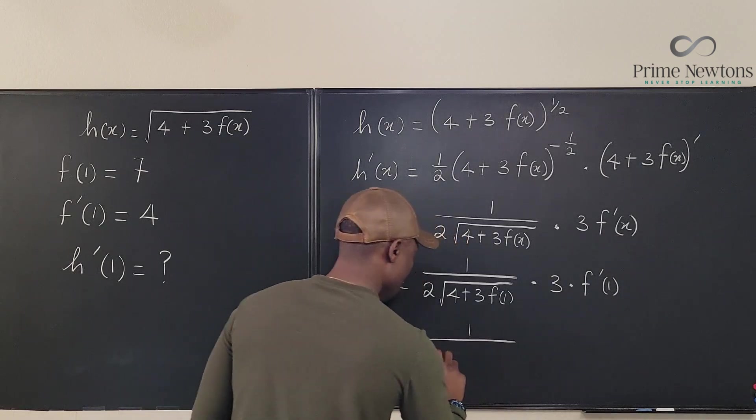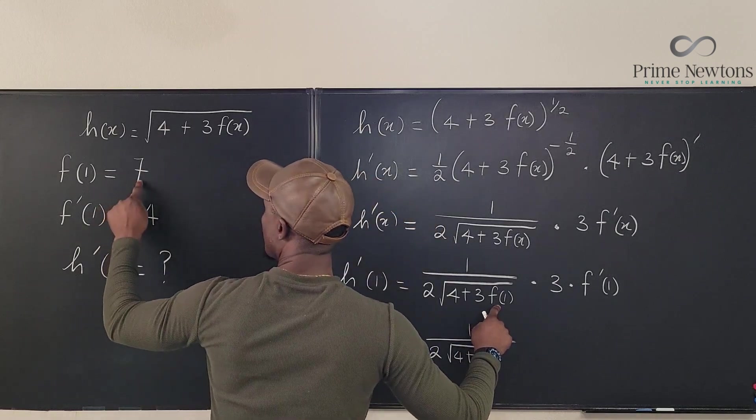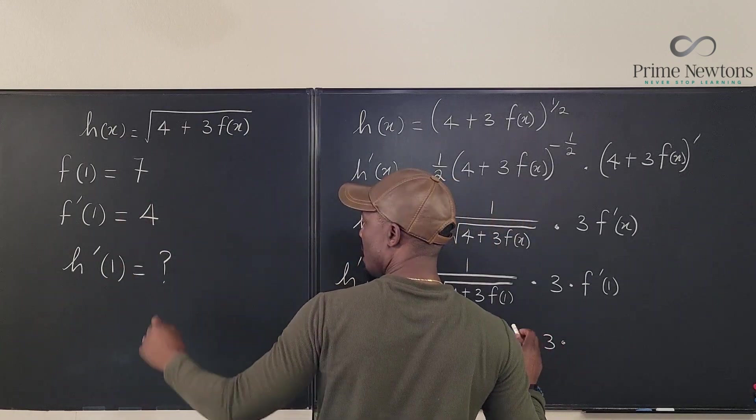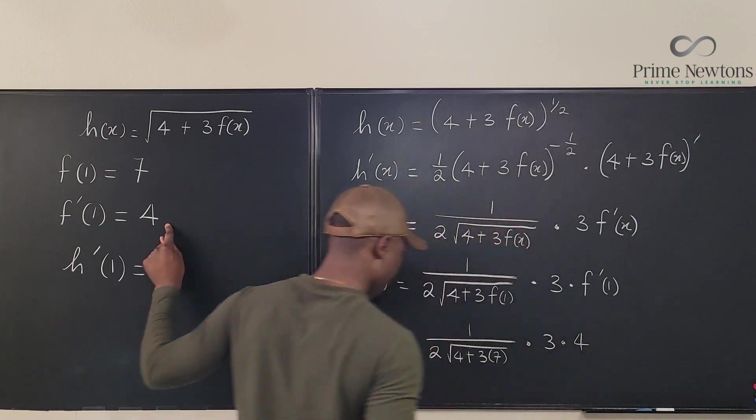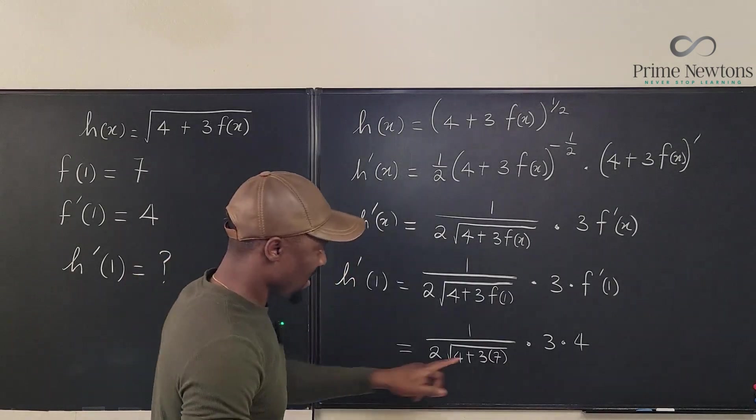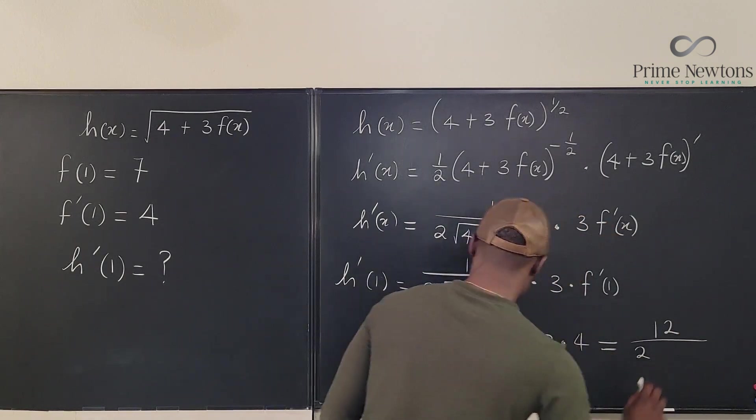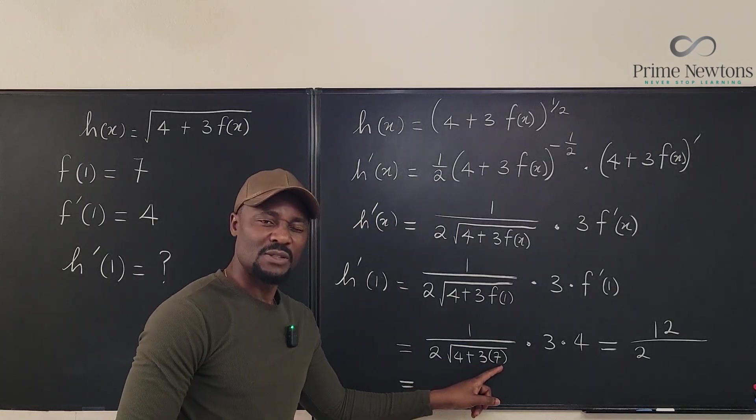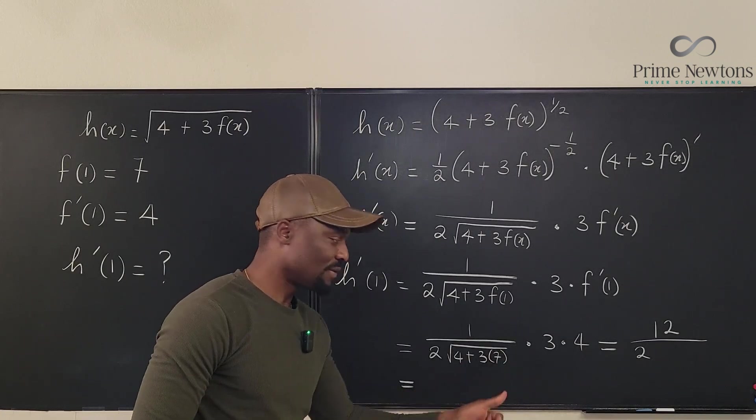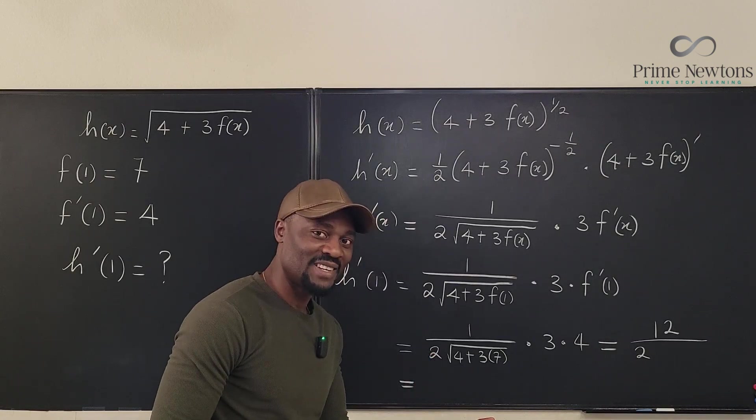This is equal to 1 over 2 times the square root of 4 plus 3 times f(1) is 7, multiplied by 3 times f prime of 1 is 4. Nice. It looks like this is going to be equal to 12. This is going to be equal to 12 over 2 times the square root of - 3 times 7 is 21, 21 plus 4 is 25. What's the square root of 25? That's 5.